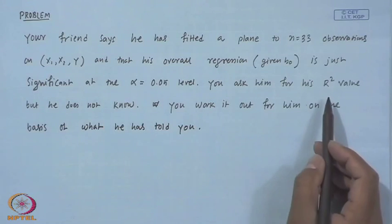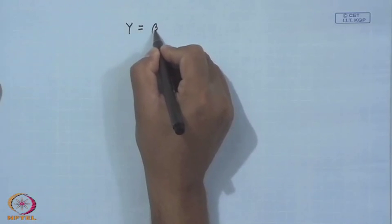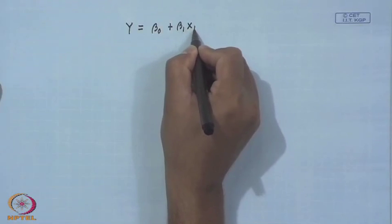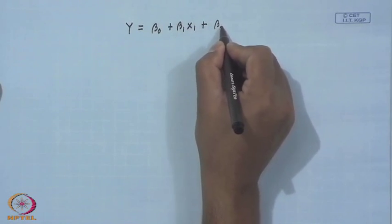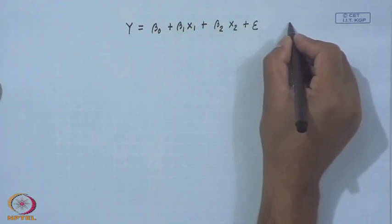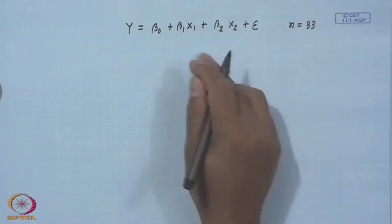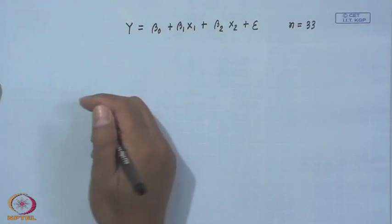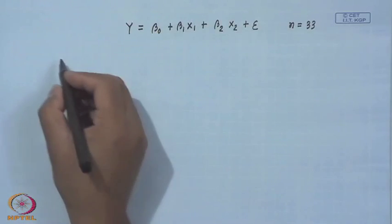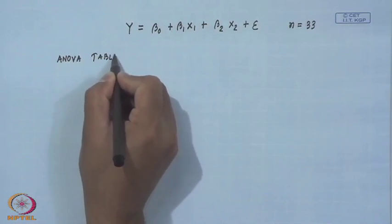You work out for him on the basis of what he has told you. The information given is that he has fitted a multiple linear regression model with two regressors x1 and x2, and his fit is significant at 0.05 level, but he does not know the R² value, where R² is the coefficient of determination — it measures the proportion of variability that is explained by the model. You have to work out this R² value from whatever he has told you. So what you know is that your friend has fitted a model: y = β₀ + β₁x₁ + β₂x₂ + ε, and this model has been fitted for n = 33 observations. From this information, you can construct an ANOVA table.